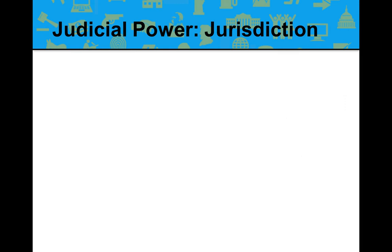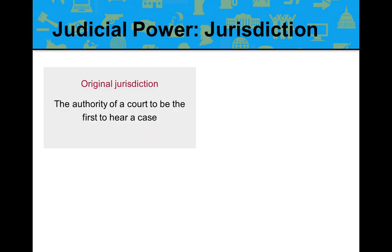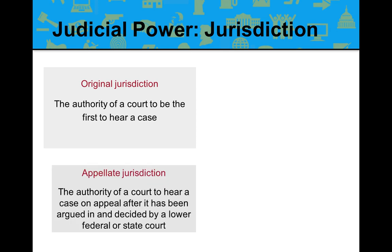Jurisdiction refers to who has the authority to first hear a case. On TV shows like Law & Order or CSI, most cases wind up in state court to determine innocence or guilt. That first court with the authority to hear a case has what is called original jurisdiction. If you lose and want to appeal, the next court has appellate jurisdiction — the authority to hear a case based on an appeal from a lower court decision.